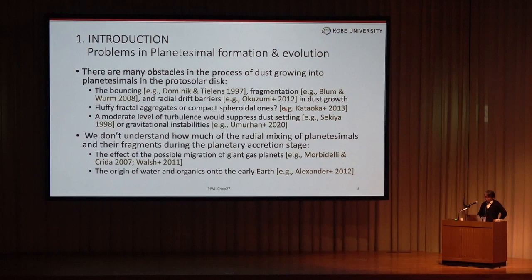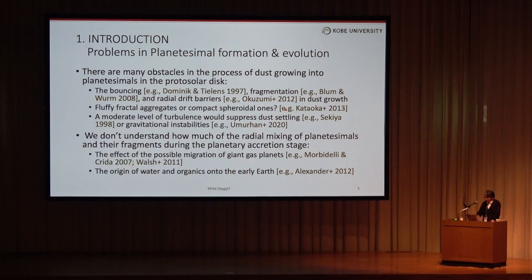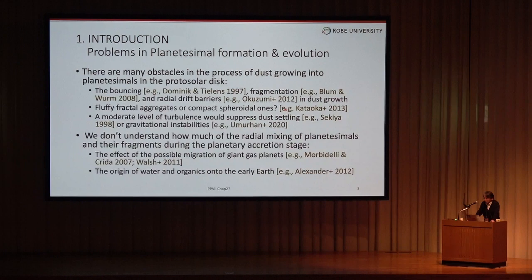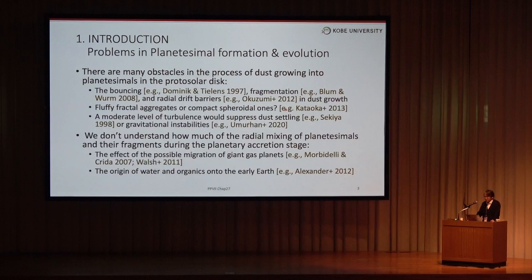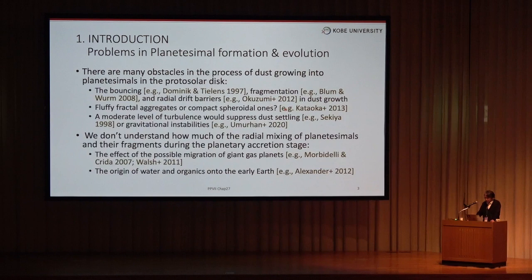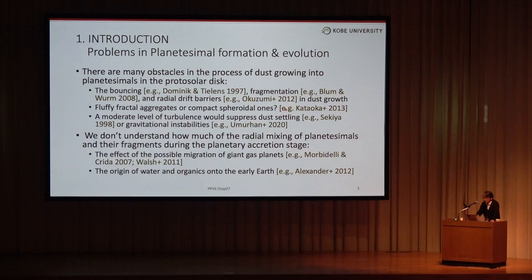First of all, I'd like to summarize the problems in planetary mass formation and evolution. The first problem is that there are many obstacles in the process of dust growing into planetary mass in the proto-solar disk. There are the bouncing, fragmentation, and radial drift barriers in the dust growth. The radial drift barrier can be cleared if the dusts are fully fluffy aggregates, but astronomical observations show that dusts are compact spherical aggregates. A moderate level of turbulence should suppress the dust settling over gravitational instabilities to form primordial streamers.